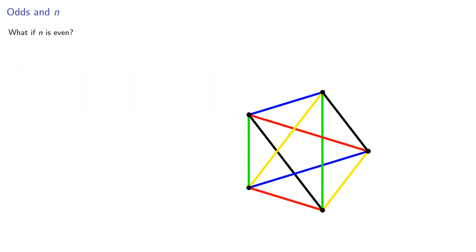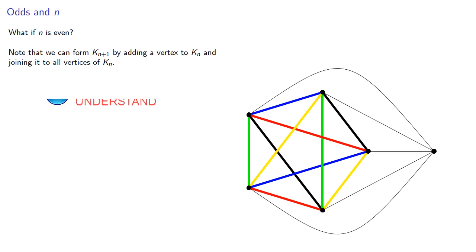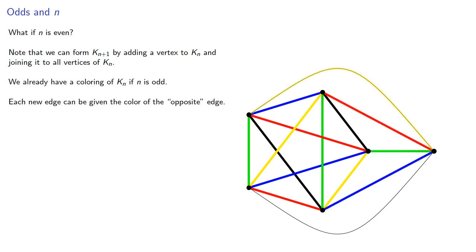What if n is even? Note that we can form Kn+1 by adding a vertex to Kn and joining it to all the vertices of Kn. We already have a coloring of Kn if n is odd. Each new edge can be given the color of the opposite edge—in other words, the color not already assigned to an edge on the vertex. And so we don't need a new color.